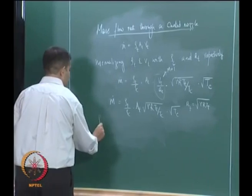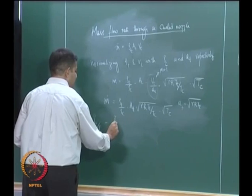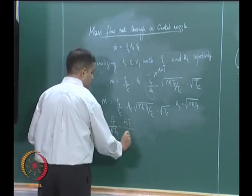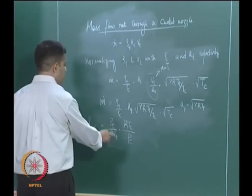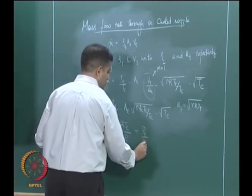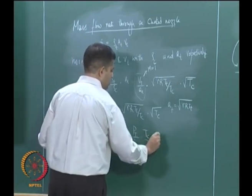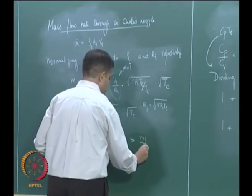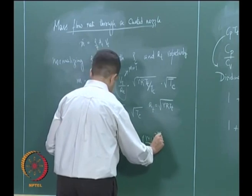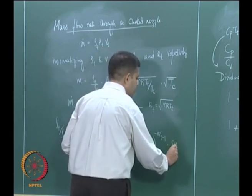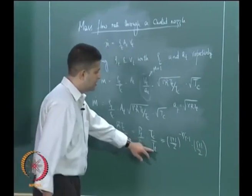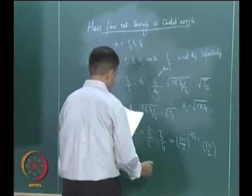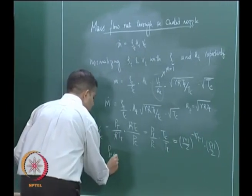Now we need to find the density ratio ρ_T/ρ_C. We already know for choked flow what the pressure ratio is. So, density ratio ρ_T/ρ_C is nothing but (P_T/RT_T)/(P_C/RT_C), which simplifies to (P_T/P_C) · (T_C/T_T). We have already derived these — the temperature ratio is (2/(γ+1)) and the pressure ratio is the isentropic relation. So, since these two have the same base, we can add the powers and simplify to get ρ_T/ρ_C as (2/(γ+1))^(1/(γ-1)).